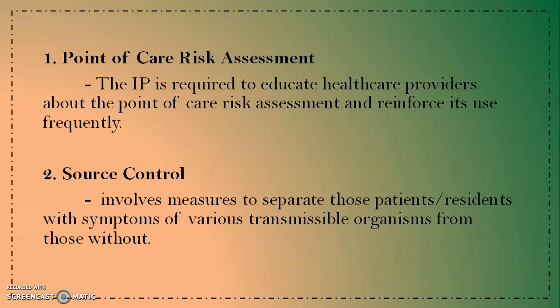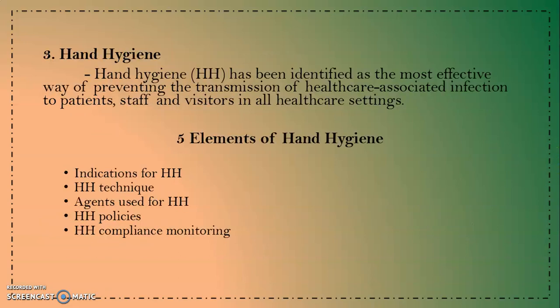The second component is source control. It involves measures to separate patients or residents with symptoms of various transmissible organisms from those without. These measures can include spatial separation, whether in separate waiting rooms or separation of patients by two meters, particularly for respiratory illnesses involving the production of aerosolized droplets.